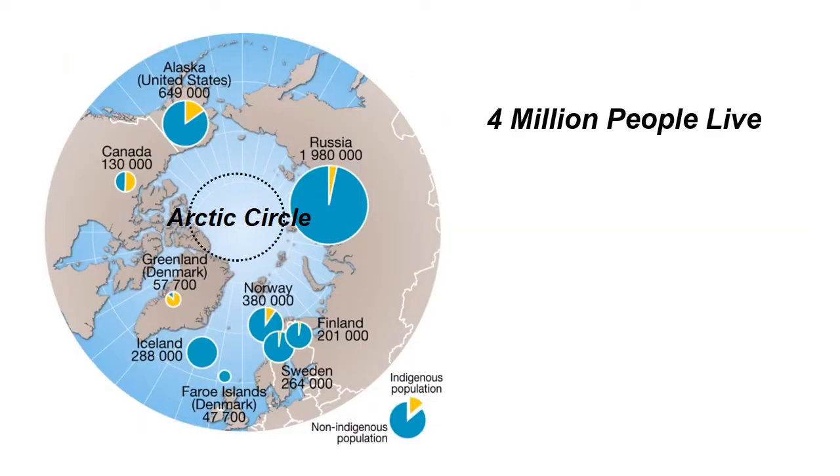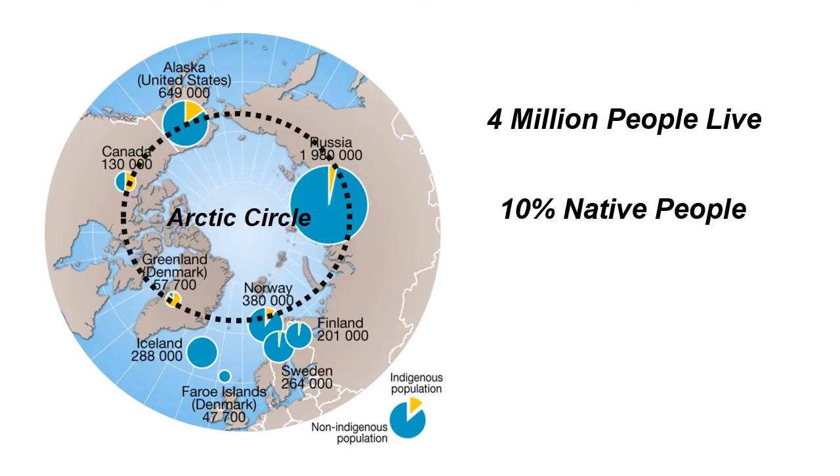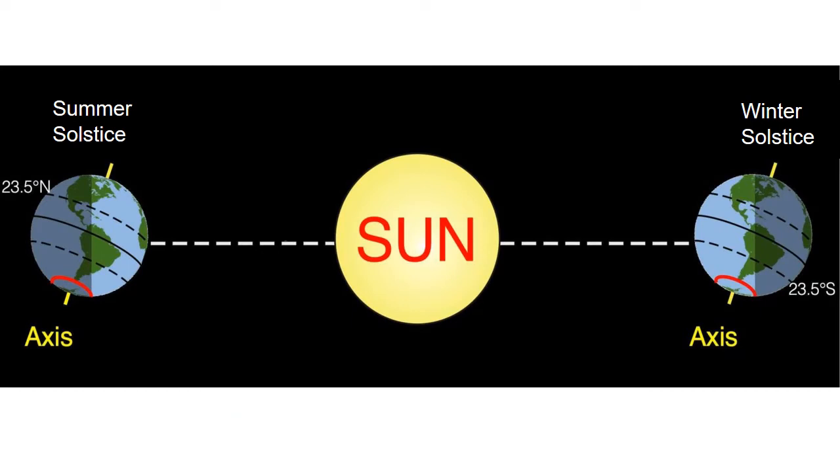Only about 4 million people live north of the Arctic Circle due to the critical climate. 10% of the region's population is made of native people who have inhabited the area for thousands of years.